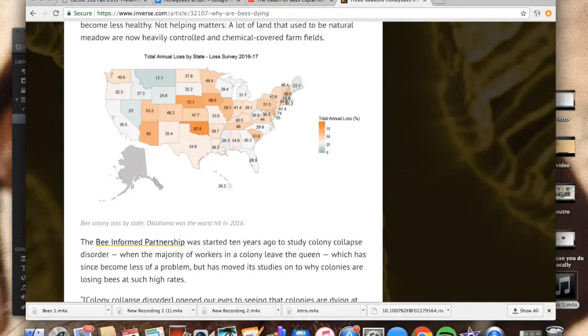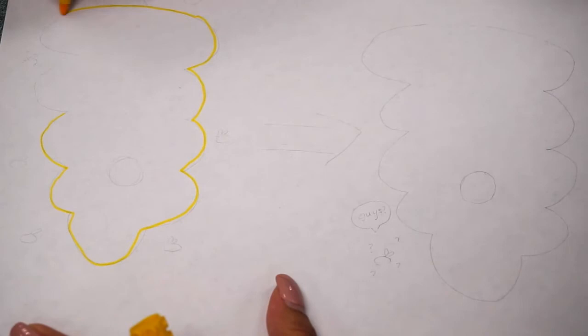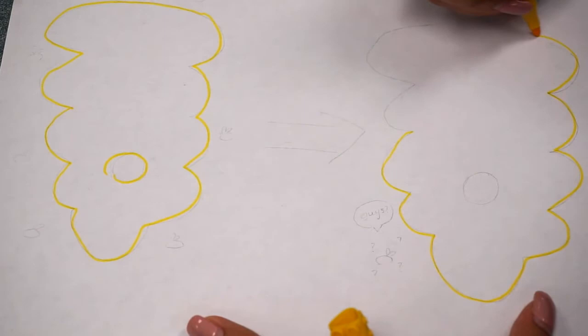As mentioned in the video, Colony Collapse Disorder is one of the reasons for the decreasing number in our bee populations, although it is not entirely to blame. There are other factors that play into the decline of bees, most anthropogenic, which we will touch upon shortly. In essence, Colony Collapse Disorder, or CCD, is when the majority of worker bees in a colony disappear, leaving behind the queen, immature bees also called broods, and food as well as nurse bees to watch over the queen and the broods.